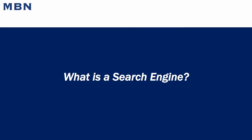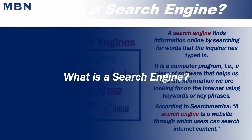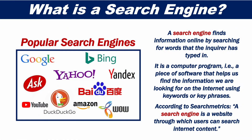What is a search engine? A search engine finds information online by searching for words that the inquirer has typed in. It is a computer program, that is a piece of software, that helps us find the information we are looking for on the internet using keywords or key phrases.